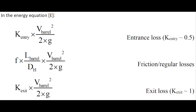In the energy equation, the first term is the entrance loss, with an entrance loss coefficient of roughly 0.5. The second term is the friction losses, or regular losses, and the third term represents the exit losses, with an exit loss coefficient of roughly 1.